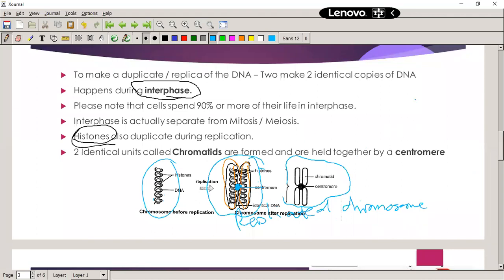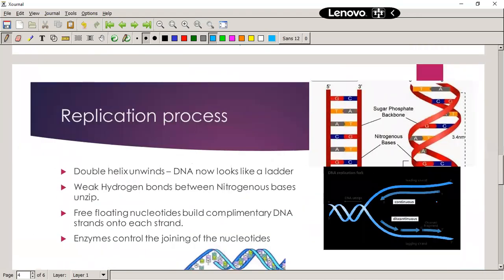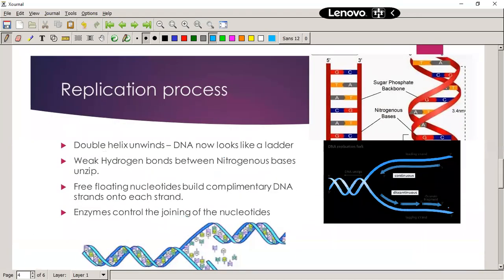We make a simplified drawing like this with two chromatids that are identical to one another. Okay, so replication process. Important: the double helix unwinds, and this is going to be very important because it's going to unwind and unzip. But please remember that it cannot unzip before it hasn't unwound.